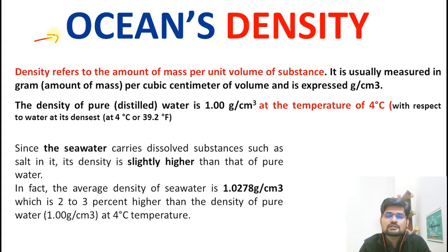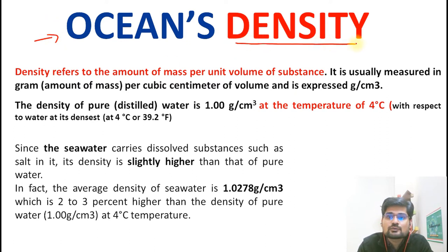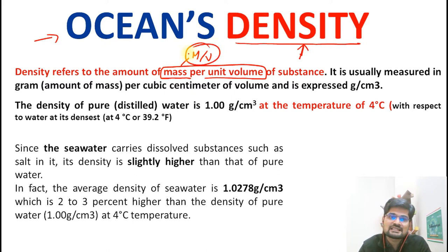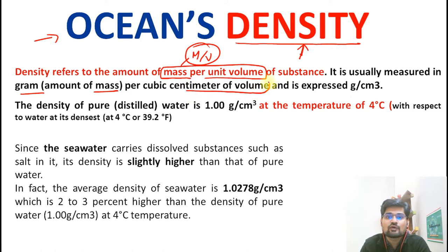After we have already learned about the ocean's temperature distribution and the ocean's salinity distribution, today let's understand about the ocean's density distributions and factors associated with it. Density refers to the amount of mass per unit volume. It is usually measured in grams per cubic centimeter of volume.